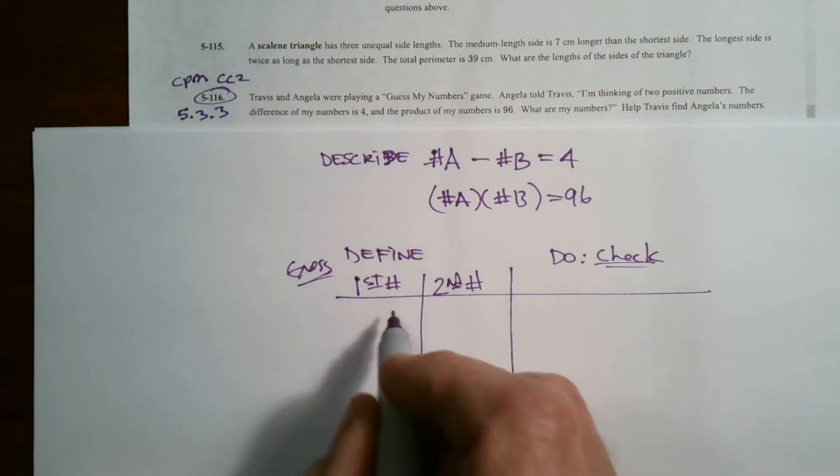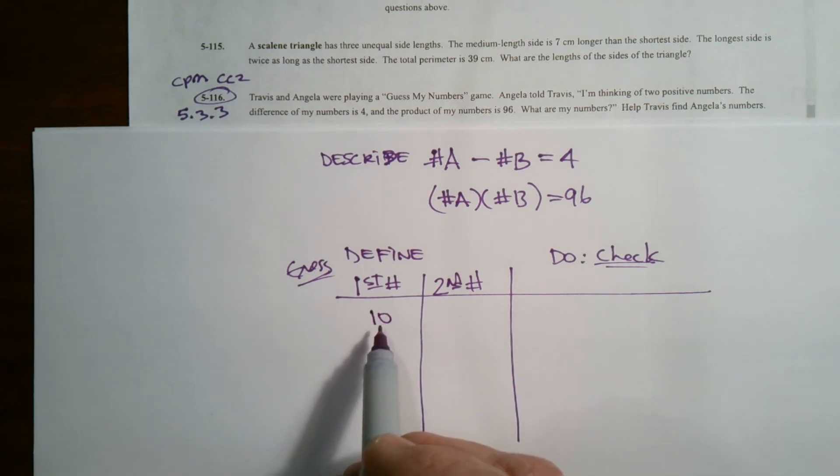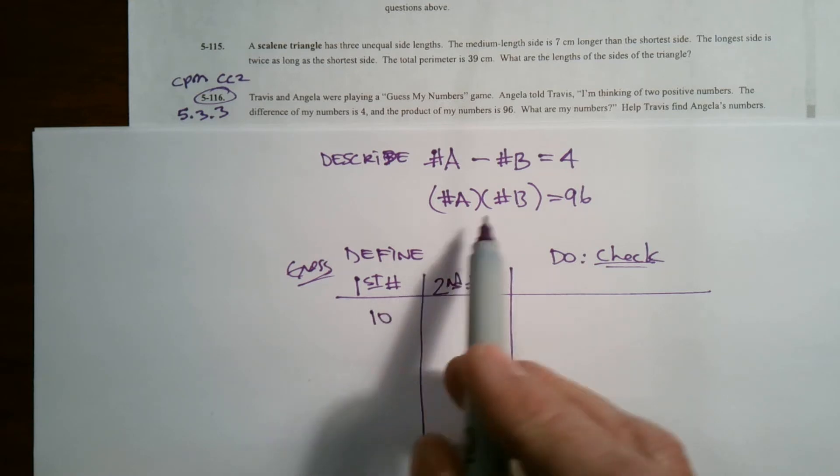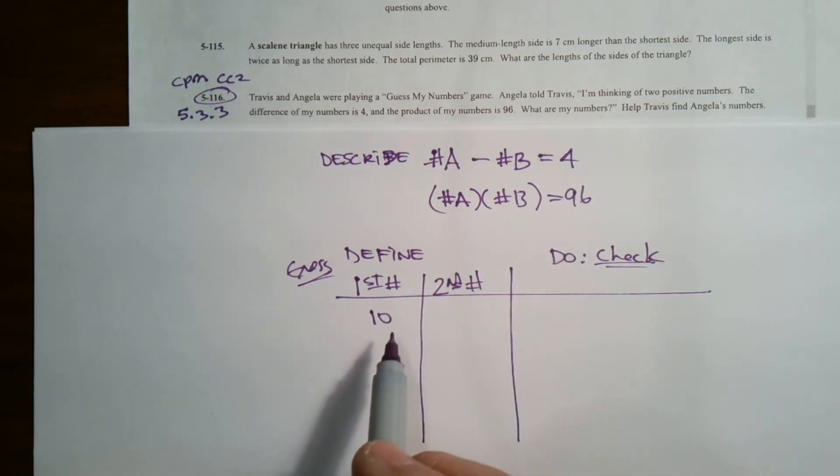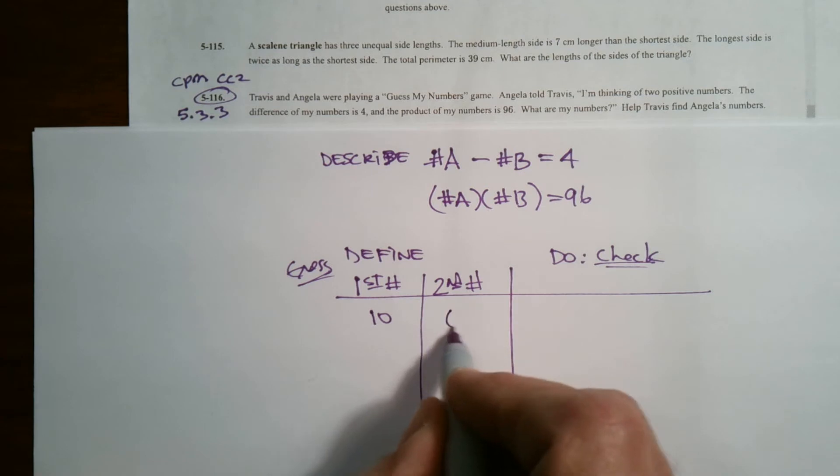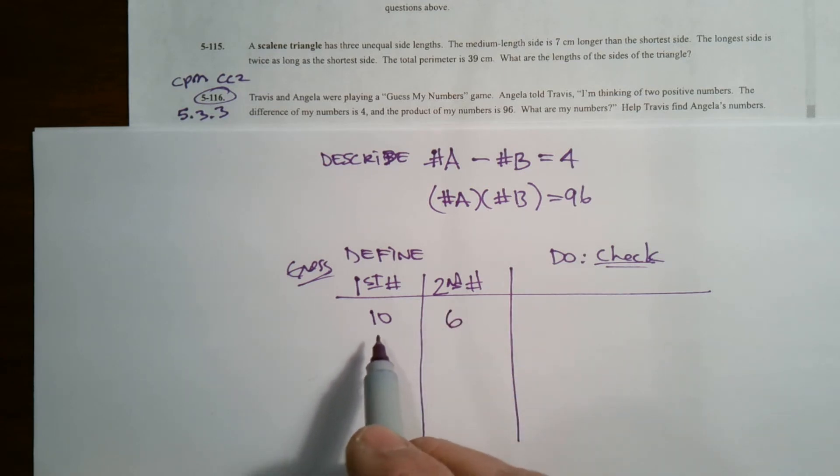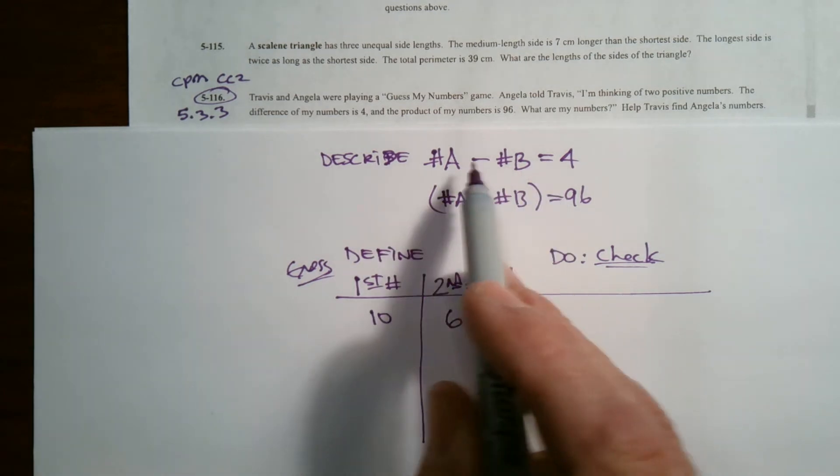Let's try a number. Let's say I pick 10. If I pick 10, I'm looking to say the difference of those two numbers is 4. So 10 minus 6 is 4. So if I choose 10, then the second number has to be 6 because the difference has to be 4.